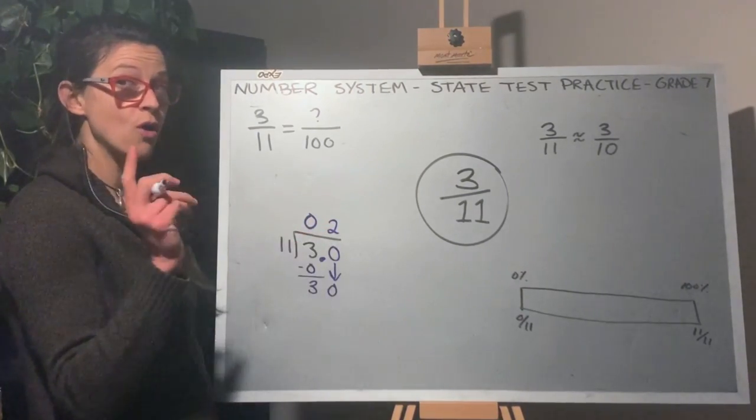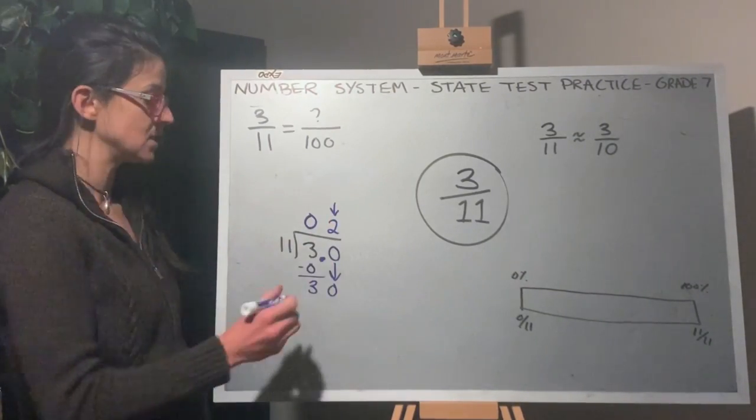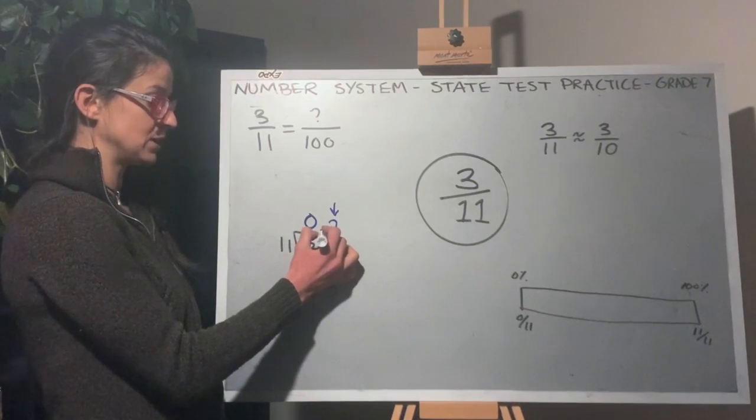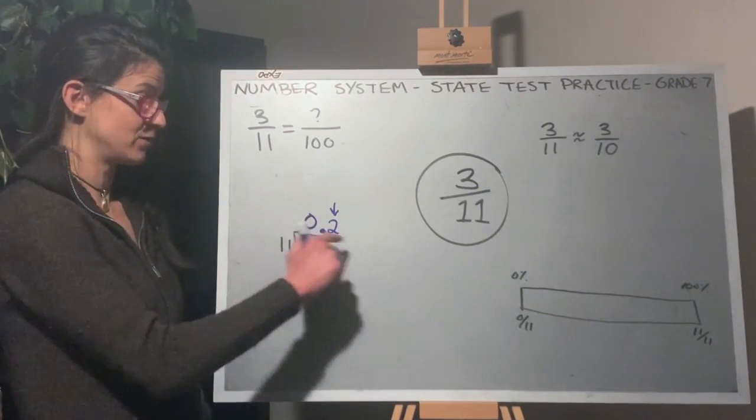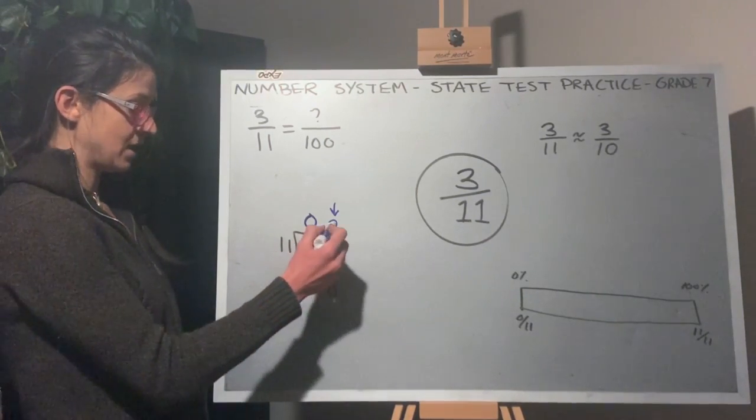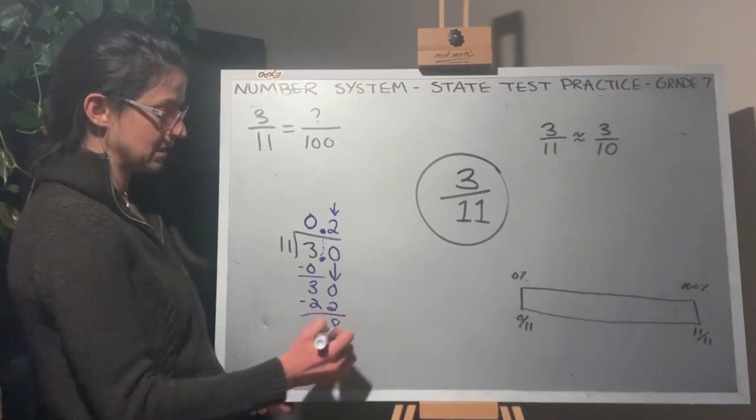But not 2 whole times. 2 is not representing the ones place, 2 is representing the tenths place. So I need to remember that this decimal point needs to be brought to the top of the long division symbol as well. So 2 times 11 is 22. I have 8 left over.